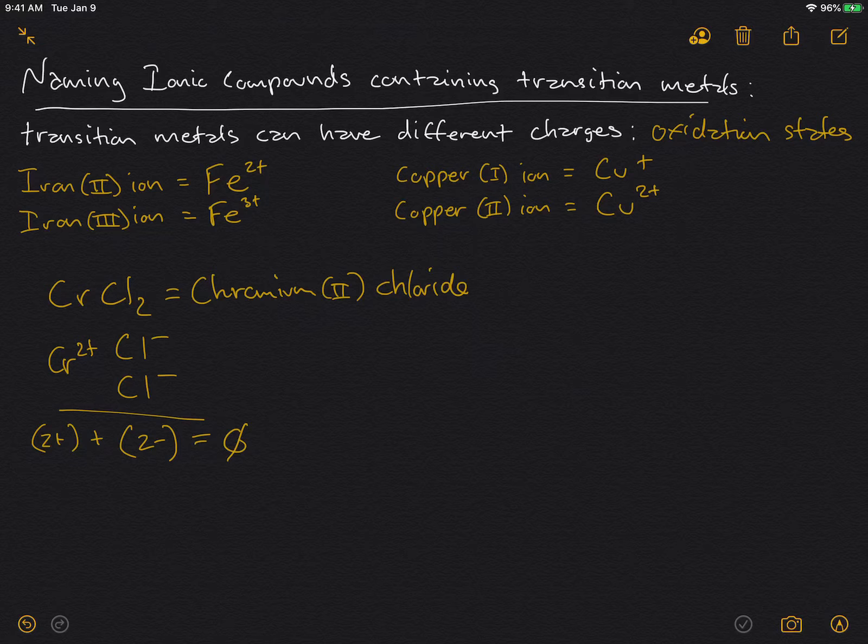So let's look at an example where we have more than one metal ion in the formula. So Fe₂O₃, this is some kind of iron oxide.